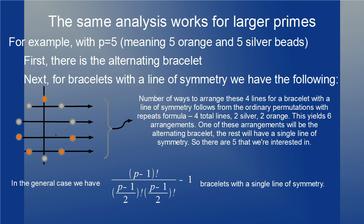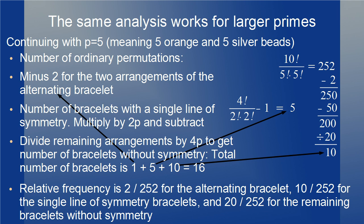For example, with p equals 5 (meaning 5 orange and 5 silver beads), first there's the alternating bracelet. For bracelets with a line of symmetry, we arrange 4 remaining bead pairs — 2 silver and 2 orange — using the permutations with repeats formula, giving 6 arrangements, of which 1 is the alternating bracelet and 5 have a single line of symmetry. The number of ordinary permutations is 252. Subtracting 2 for the alternating bracelet gives 250, which is divisible by 2p = 10. Subtracting the 5 symmetric bracelets times 10 gives 200, and dividing by 4p = 20 gives 10 asymmetric bracelets. Total: 1 alternating, 5 with a single line of symmetry, and 10 non-symmetric — 16 bracelets total.